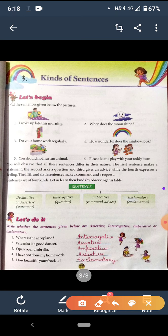While the fourth expresses a feeling. In the fourth, a feeling is being expressed: How wonderful does the rainbow look? The fifth and sixth sentences make a command and a request. In the fifth and sixth, commands and requests are being made.